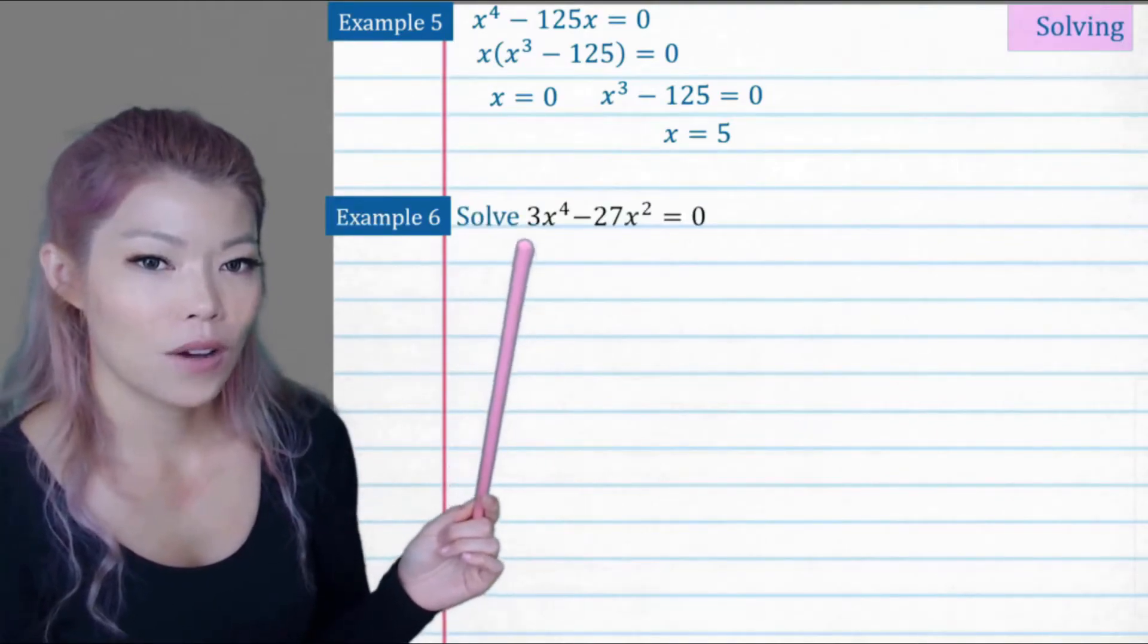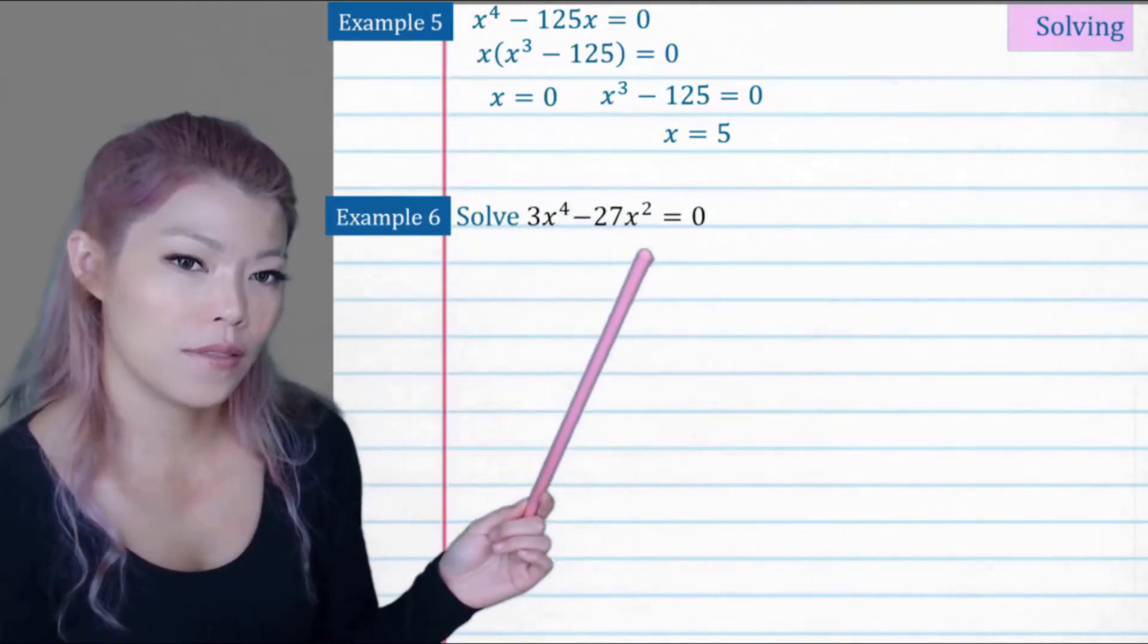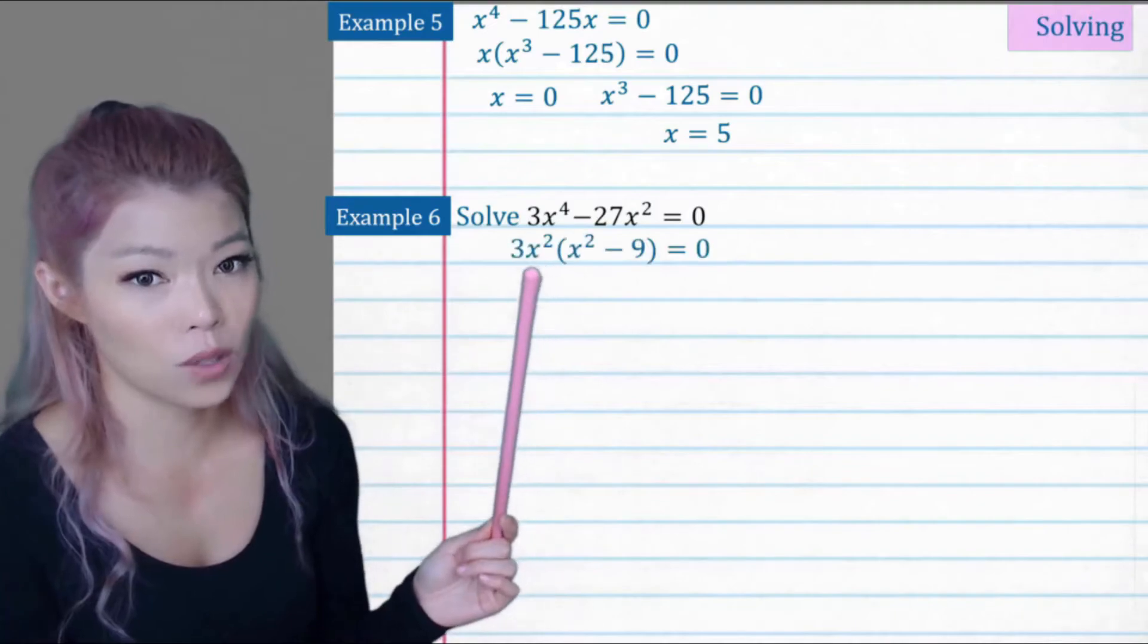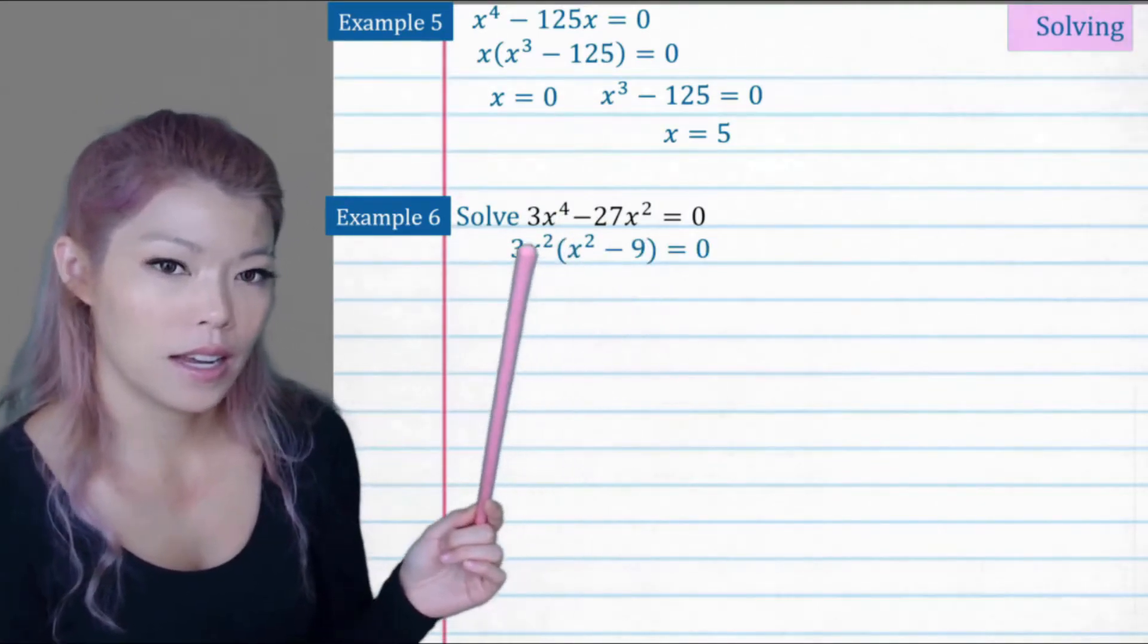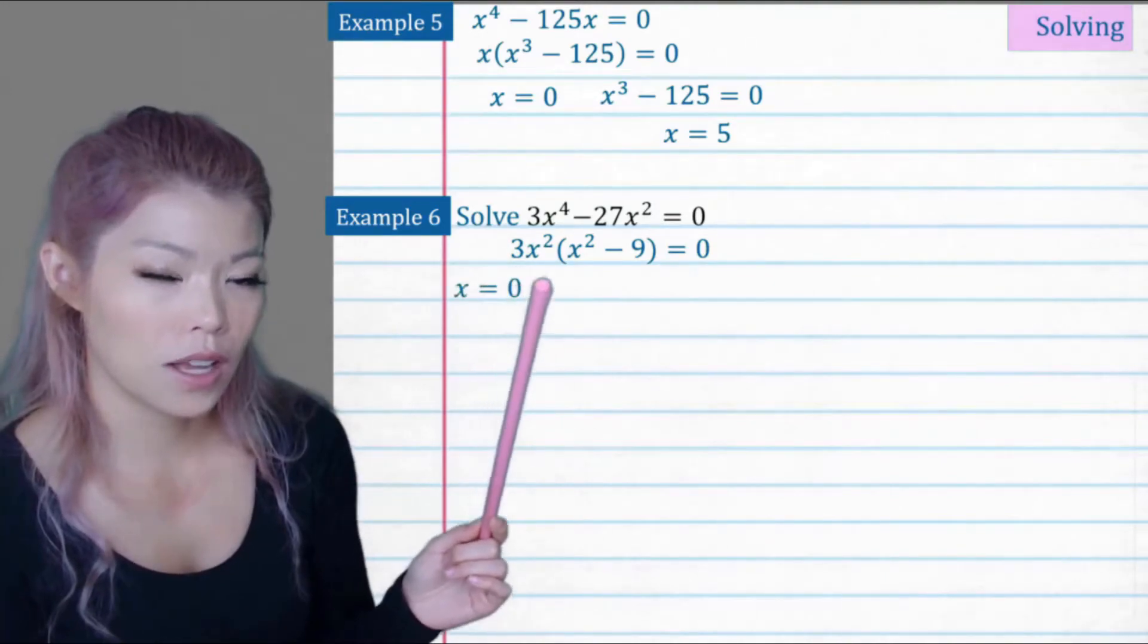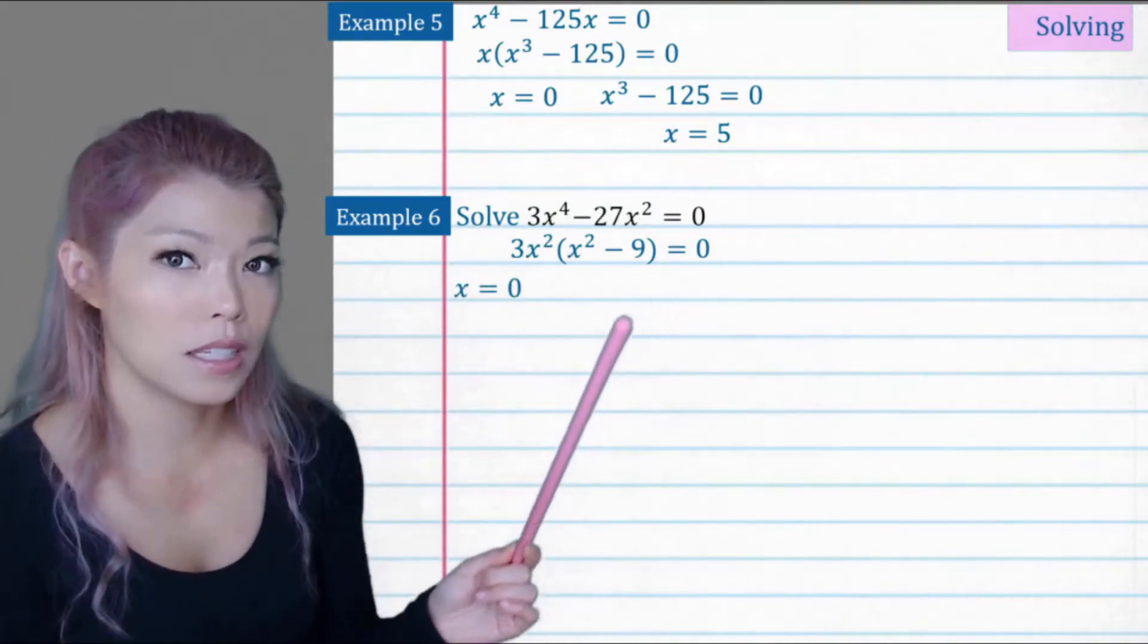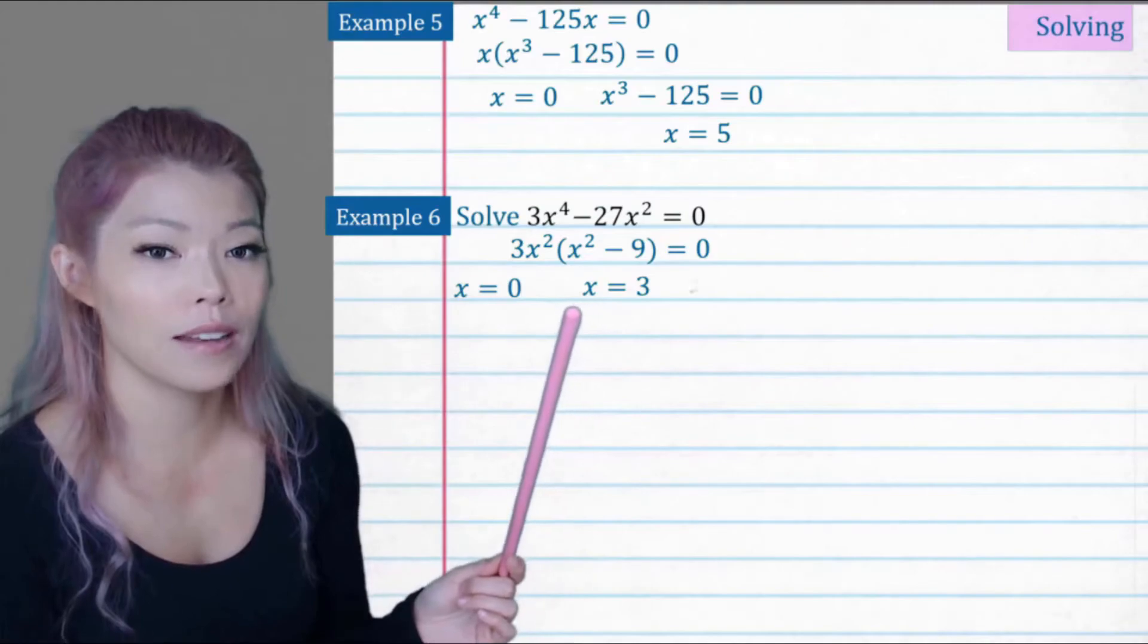Example six. Solve for 3x to the power of 4 minus 27x squared. We can take the 3 and x squared out, so we're left with x squared minus 9. And now here, x is equal to zero. And here, x squared minus 9 is the difference of two squared, so 3 and negative 3.